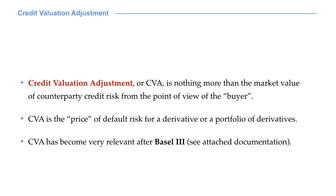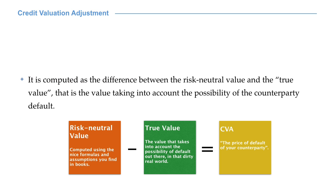Credit valuation adjustment, or CVA, is nothing more than the market value of counterparty credit risk from the point of view of the buyer. It has become very relevant after Basel III. Banks are now required to compute CVA. Heuristically, CVA is the price of default risk for a derivative or a portfolio of derivatives. It can be quantified as the difference between the risk-neutral value and the true value — that is, the value taking into account the possibility of counterparty default. In a sense, it measures the difference between theory and practice. In most pricing formulas, default is not taken into account. CVA corrects for this.